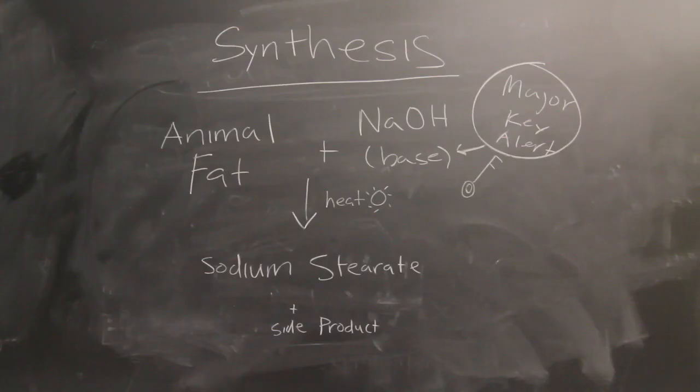The industrial synthesis of sodium stearate is pretty straightforward. You take some animal fat, and you add it to a base. When heated, sodium stearate and some side products precipitate through a pretty simple mechanism.